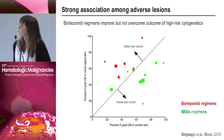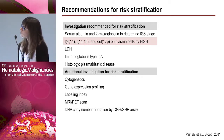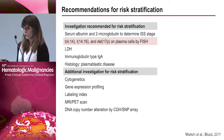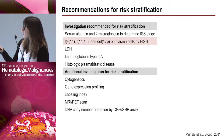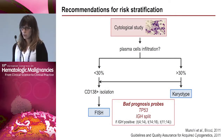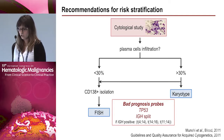Bortezomib-based regimens have been shown to improve, but not overcome, the poor outcome of high-risk cytogenetics patients. Cytogenetics is therefore very important, and there are published recommendations for risk stratification. The 2011 recommendations published in Blood state that it is mandatory to apply FISH on plasma cells to study t(4;14), t(14;16), and 17p deletion.